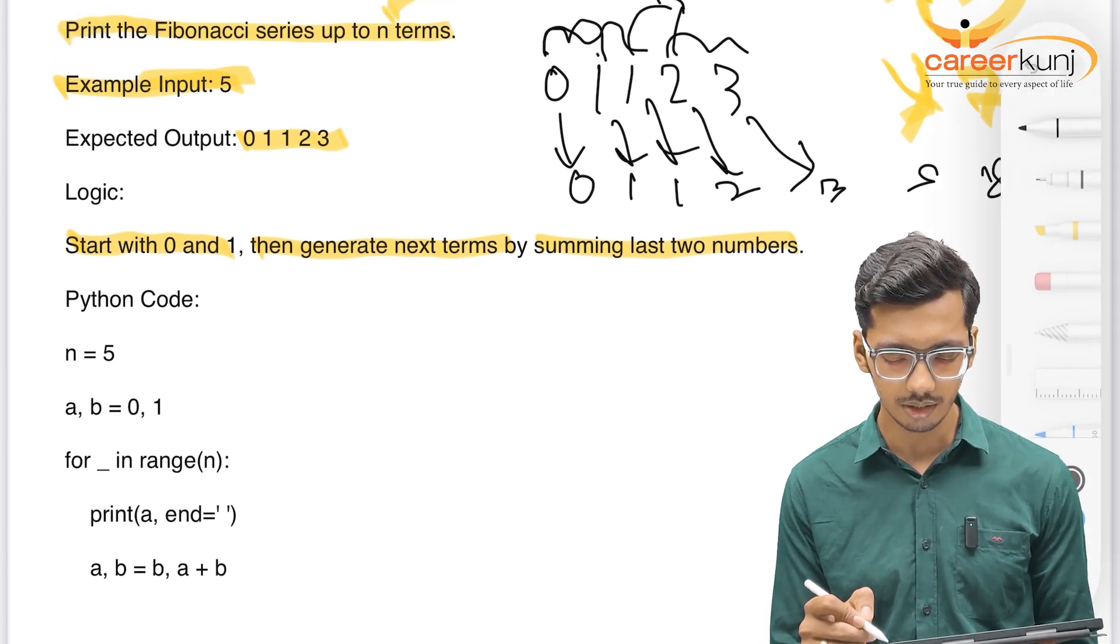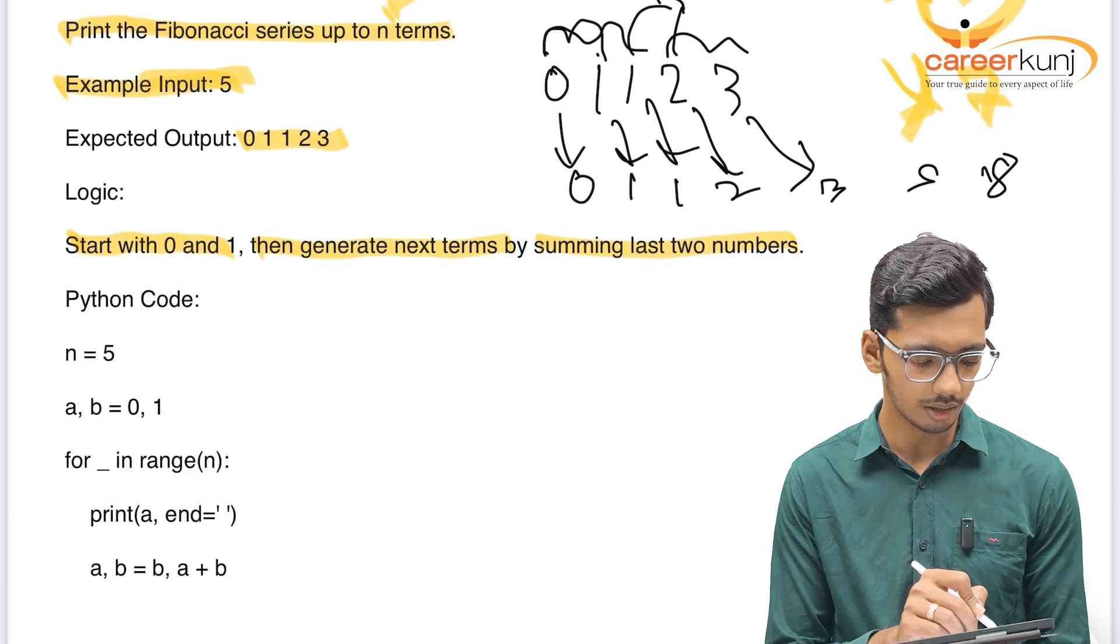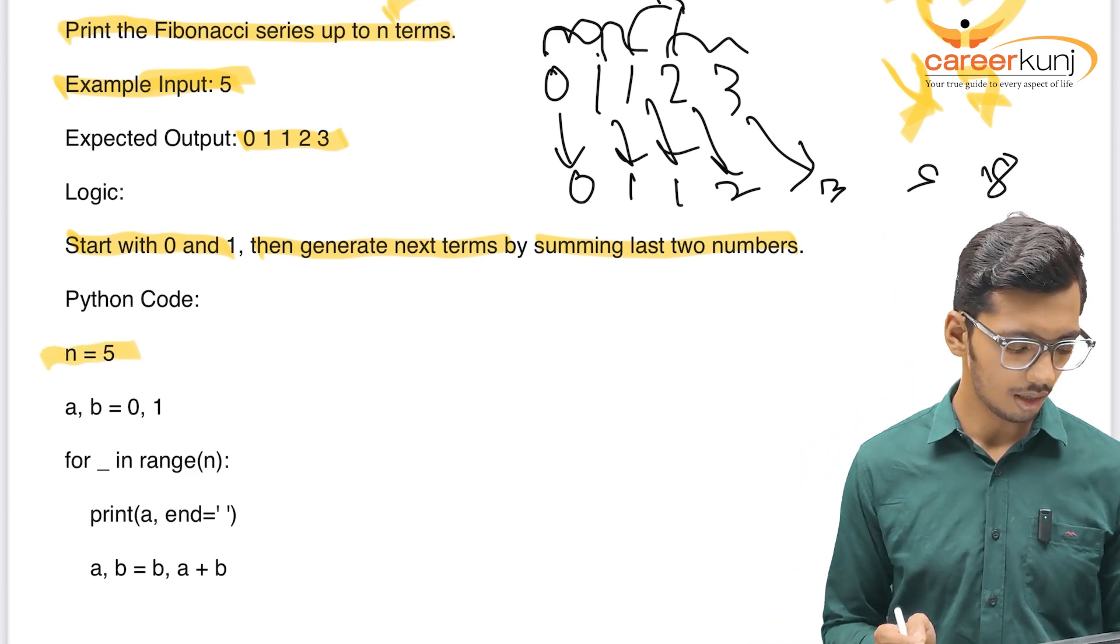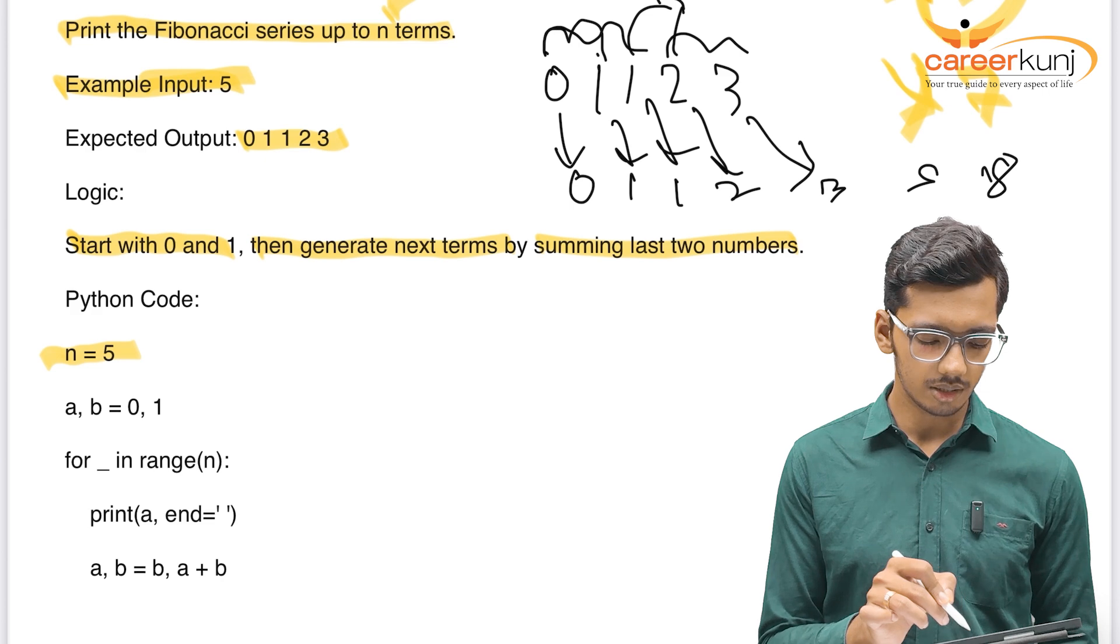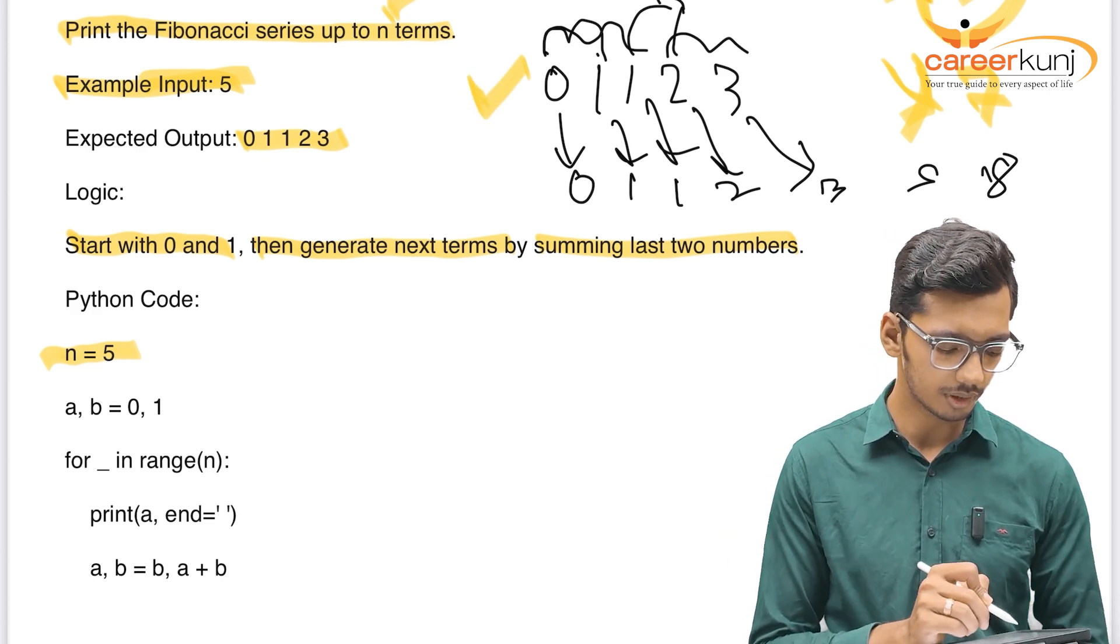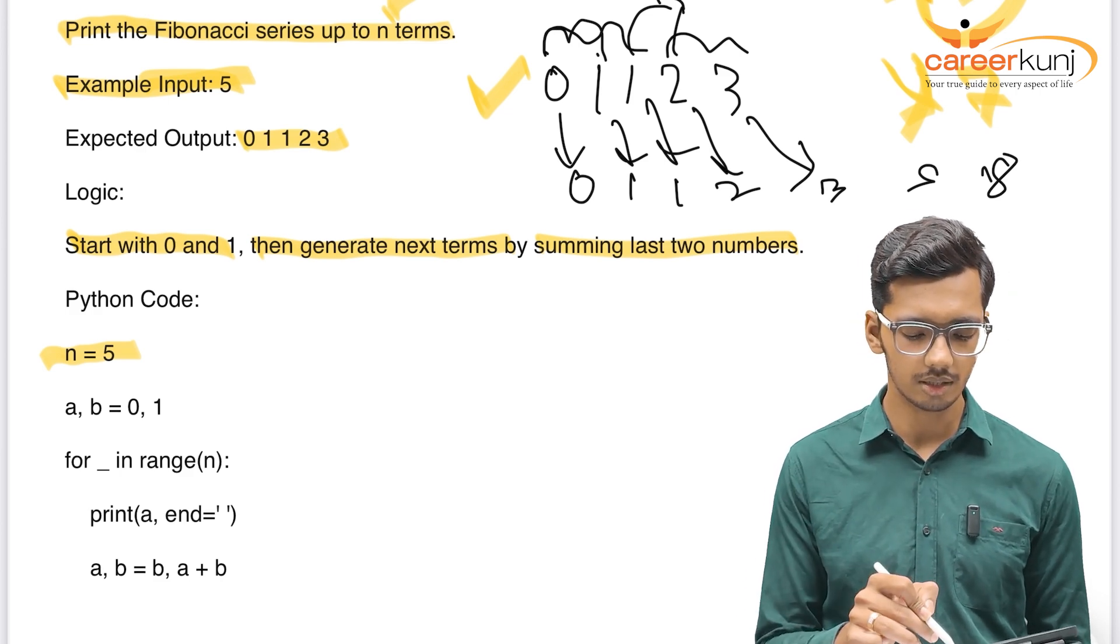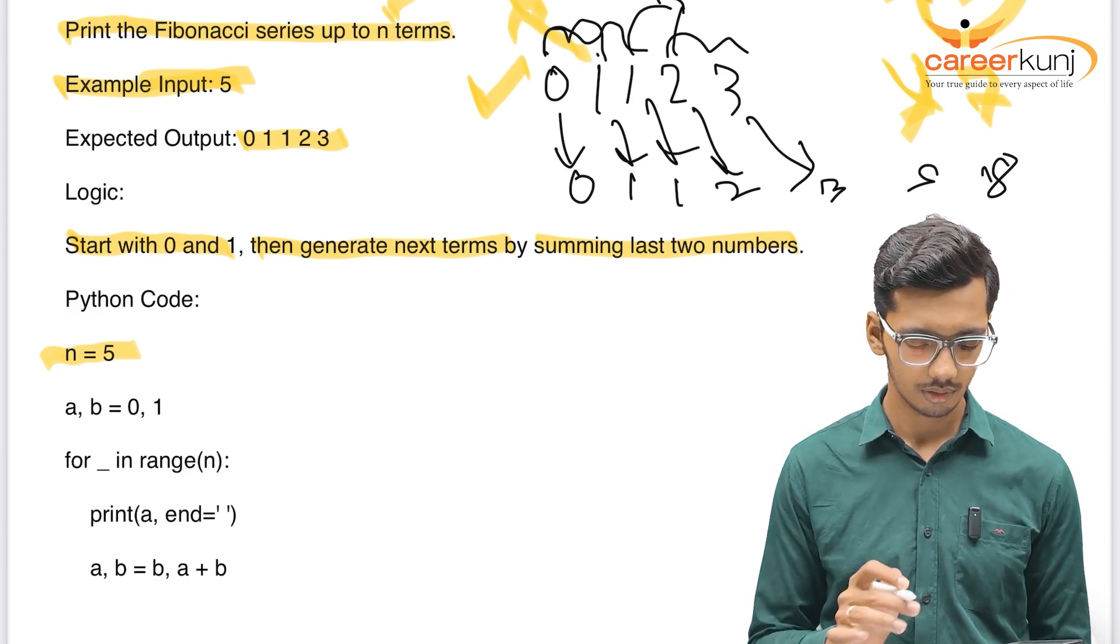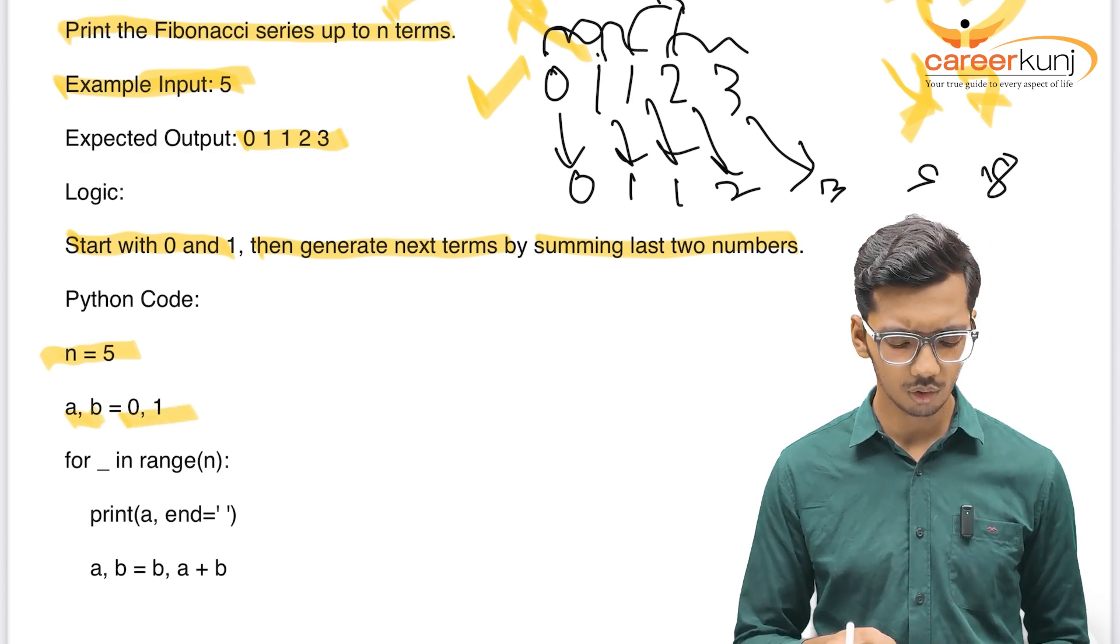Here, I am declaring one integer as 5 because in my problem statement, it is given to take the Fibonacci series of up to 5. I will be initializing two variables. That is my first position, that is 0. That is, no matter what is the length of your series, it will always be 0, my first character. Second, my B, that will be 1. Again, it is consistent. So, I am taking A and B as 0, as 1.